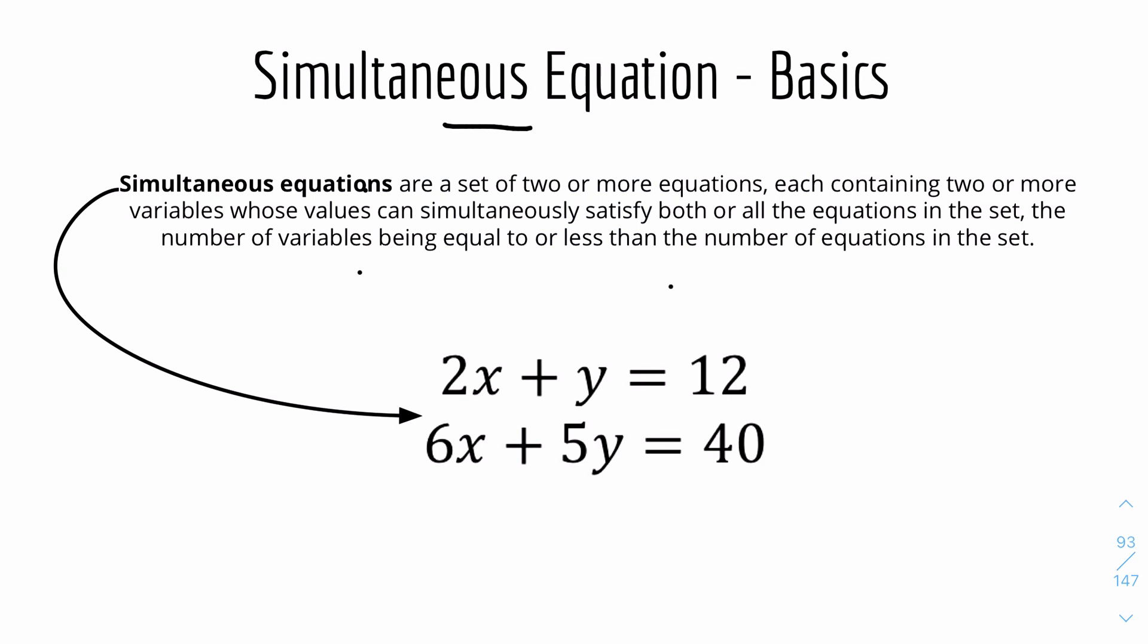It's quite a wordy and long definition. But to put it short, simultaneous equations are when there's mostly two equations with some unknowns, like x and y, and they both equal something because it's an equation. You can use various methods to find out the values of x and y that satisfy both equations.